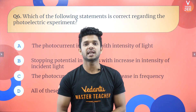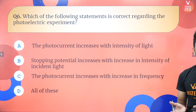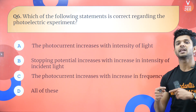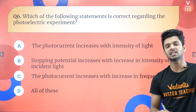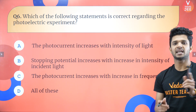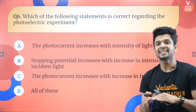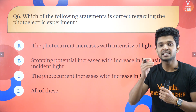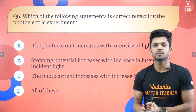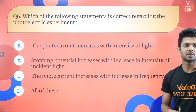Question six — which statements about the photoelectric experiment are correct? Photo current increases with intensity of light — TRUE, because more photons means more emitted electrons, increasing current. Stopping potential increases with increase in intensity — FALSE, because stopping potential depends only on the frequency of incoming light, not its intensity. Photo current increases with increase in frequency — also FALSE. Therefore the correct answer is option A.